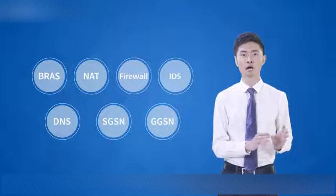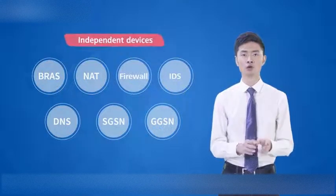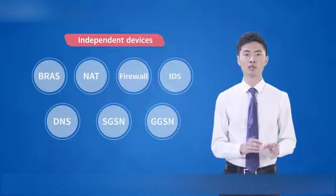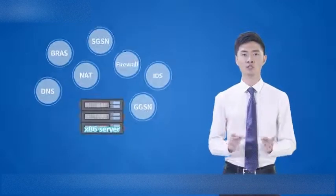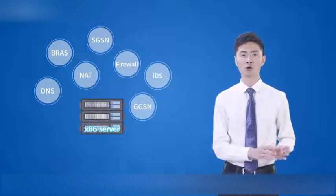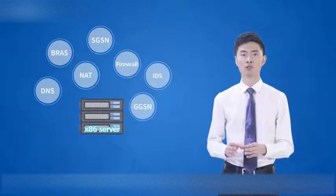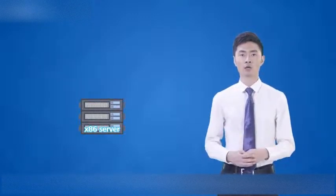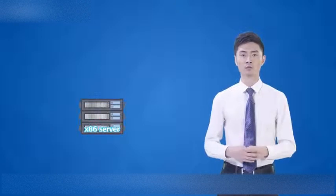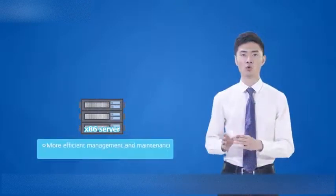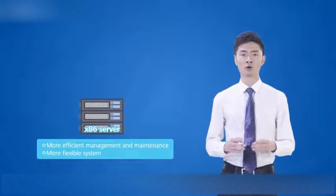On traditional networks, hardware and software are closely coupled and are not versatile. NFV, on the other hand, uses standard x86 servers and generalized storage and switching devices. Software and hardware are decoupled, and the NE functions that once required specialized hardware are virtually implemented through software on x86 servers. This makes management and maintenance more efficient and the system more flexible.